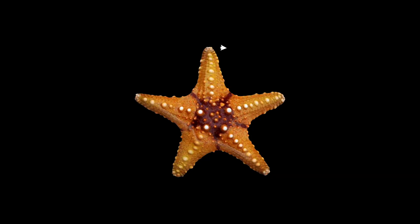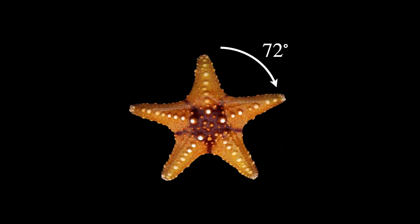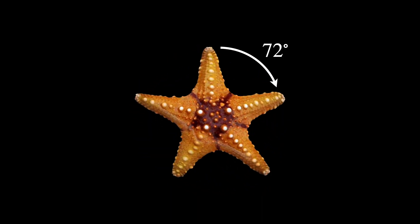We call something symmetric when it looks the same from more than one point of view. If we take a starfish, every 72 degrees it looks like it did 72 degrees before. In order to generalize it, we need to set up three conditions.